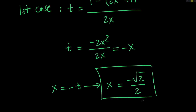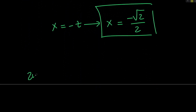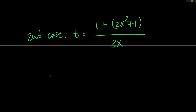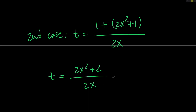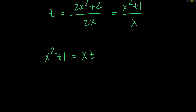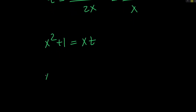Let's go ahead and talk about the second case. In the second case, t equals 1 plus the quantity 2x squared plus 1, divided by 2x, which means that t is equal to 2x squared plus 2 divided by 2x, which simplifies to x squared plus 1 divided by x. So if I cross multiply, I can say that x squared plus 1 equals x times t. And if I replace t with root 2 divided by 2, I'm going to get x squared minus root 2 divided by 2 times x plus 1 equals 0.